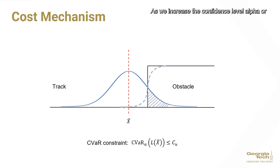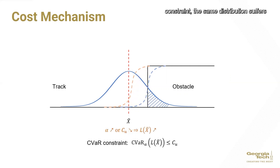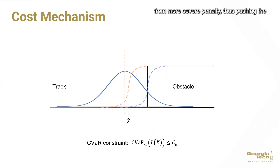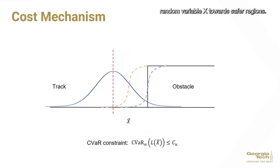As we increase the confidence level alpha or decrease the upper bound CU in the CVaR constraint, the same distribution suffers from more severe penalty, thus pushing the random variable x towards safer regions.